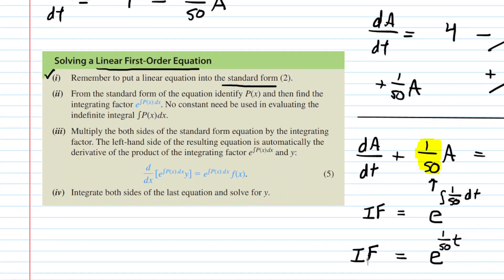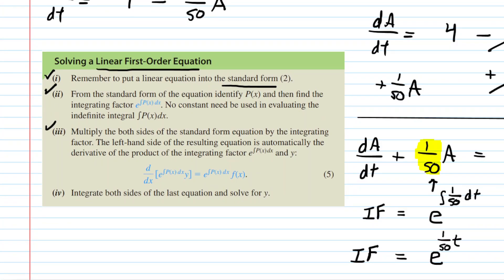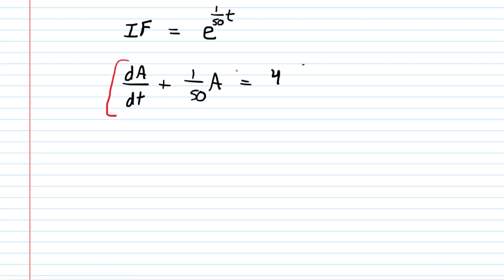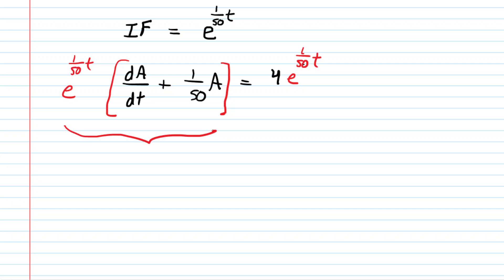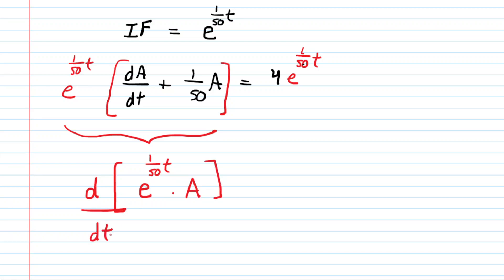We multiply both sides of the differential equation by that integrating factor, e to the one-fiftieth t. The left-hand side can then be condensed — it can be rewritten as the derivative of e to the one-fiftieth t times our dependent variable A. You can verify this by computing the derivative of that product using the product rule, and you would arrive at the same expression.